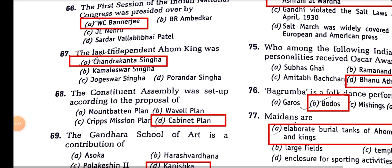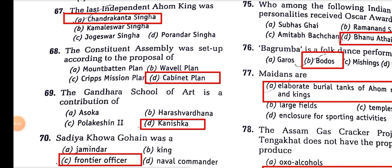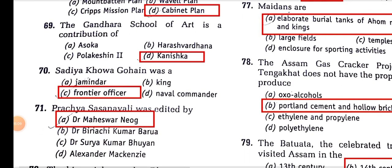The last independent Ahom king was Chandrakanta Singh. The Constituent Assembly was set up according to the proposal of the Cabinet Mission Plan. The Gandhara School of Art is a contribution of Kanishka, the Kushan ruler.